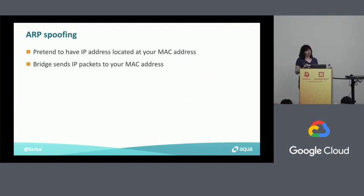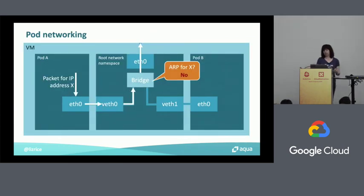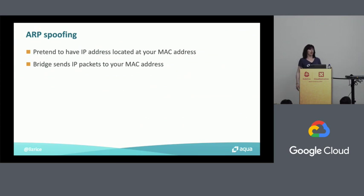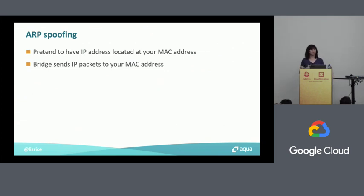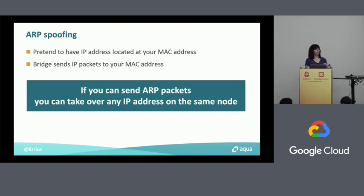So if we want to do ARP spoofing, all we need to do is pretend that an IP address is at the MAC address we're actually living on. If I was pod B, I could pretend the MAC address of VF1 belongs to a different IP address. That's what ARP spoofing is. Because we've told the bridge 'I own that IP address, it's over here on my MAC address,' the bridge will quite happily send IP packets to that MAC address. If you're able to send ARP packets, you can take over any IP address on the same node.